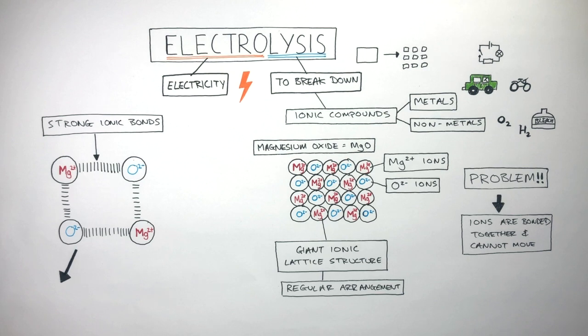One way of breaking the strong ionic bonds is to melt the ionic compounds. A lot of heat energy is needed to overcome these strong electrostatic forces of attraction and this makes a molten liquid. Molten means a very hot liquid.